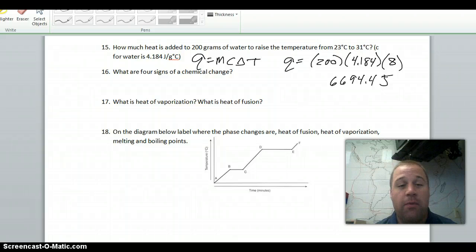For 17, the heat of vaporization is the heat needed to go between a liquid and a gas. So either going from a liquid to a gas, which is vaporization, or going from a gas to a liquid, which is condensation, but how much heat is needed. Heat of fusion is how much heat is needed to go from a solid to a liquid or a liquid to a solid.